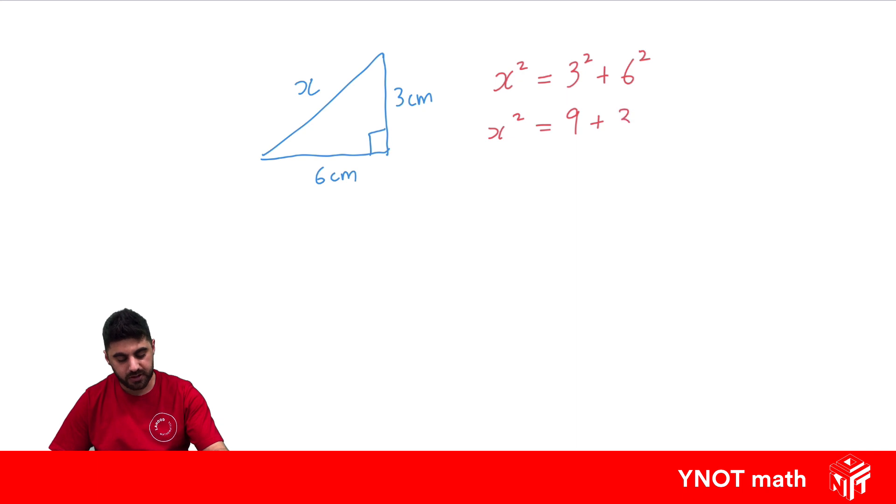6 squared, which means 6 times 6, which is 36. And we've got 9 plus 36, which is going to give us 45. Don't forget, we need to square root both sides, because we need to figure out x not x squared, and the square and the square root will cancel out. So x equals the square root of 45. Well, it's not a nice number, but we can put it in the calculator to round it to a decimal place, which gives us 6.7 centimetres to 1 decimal place.